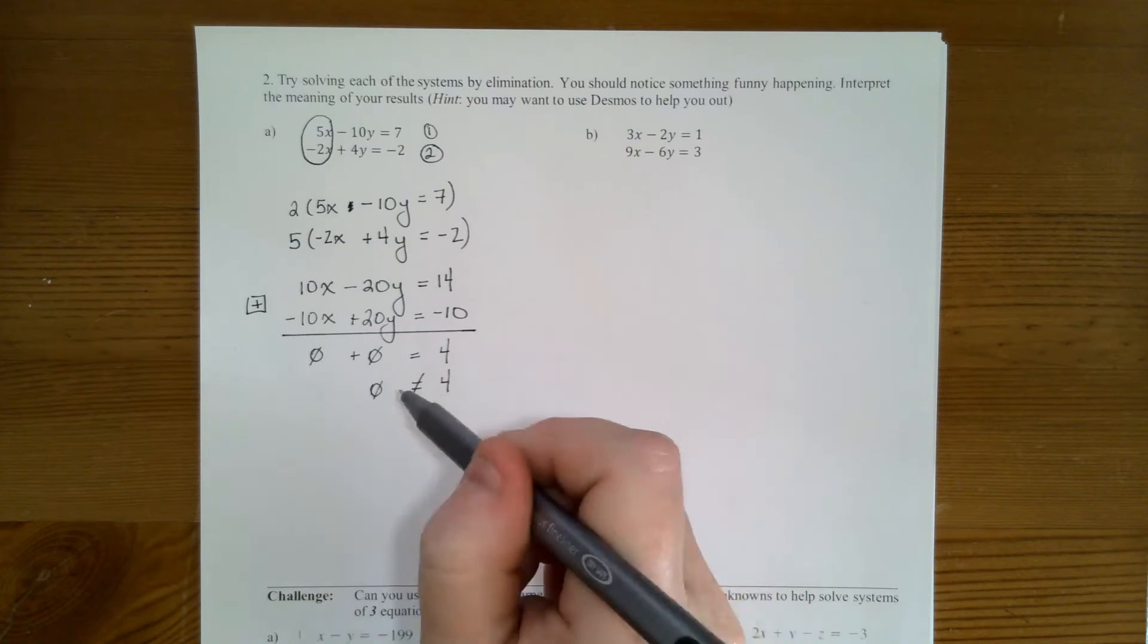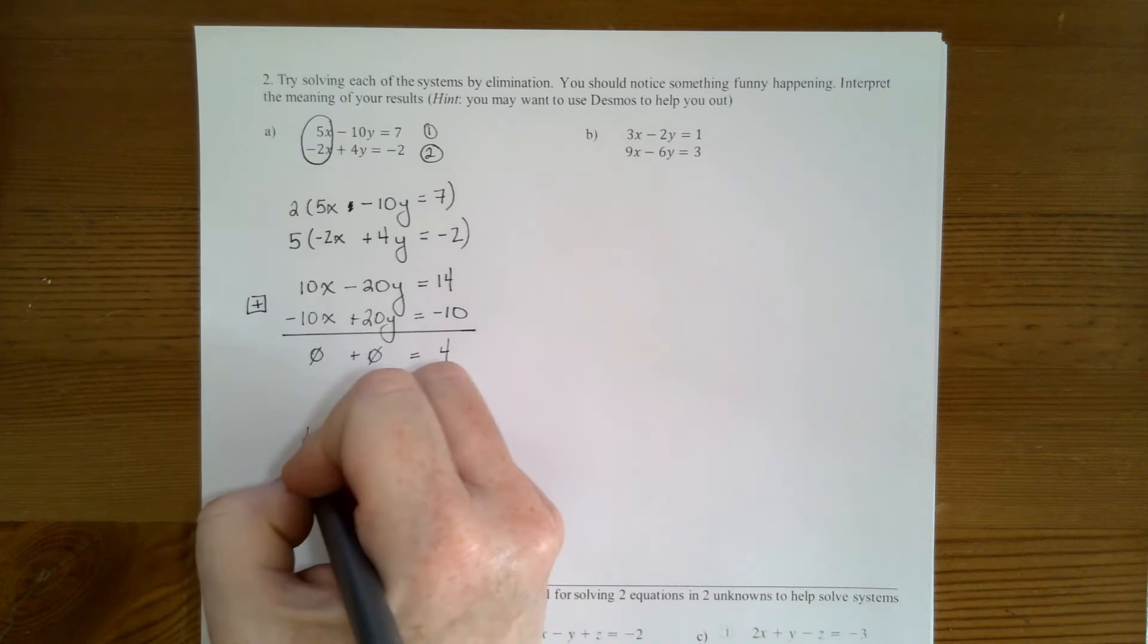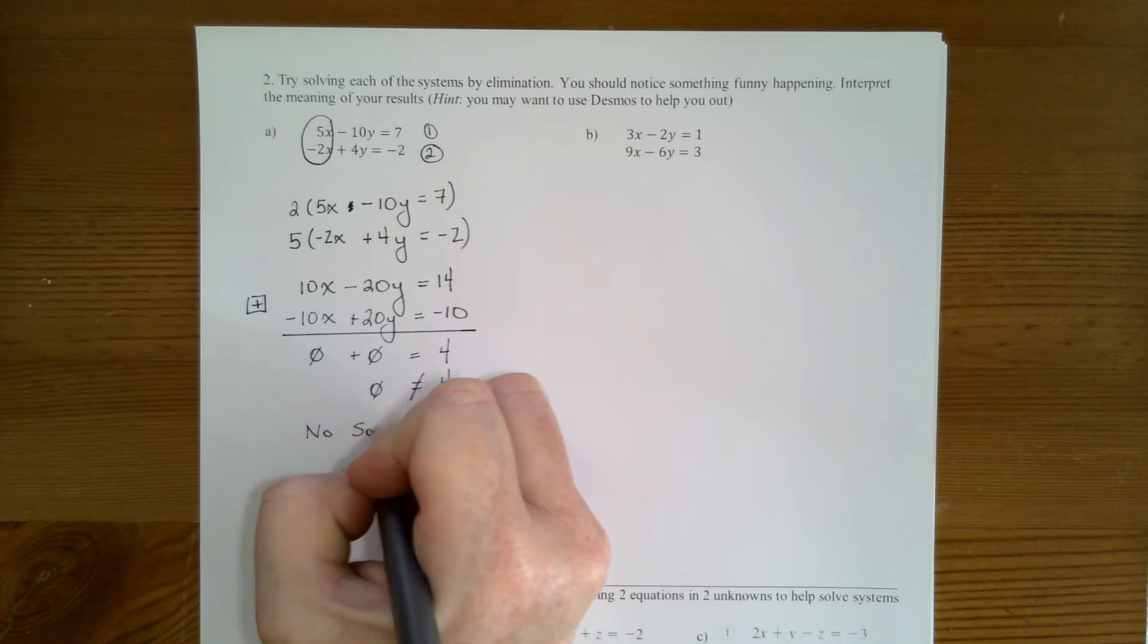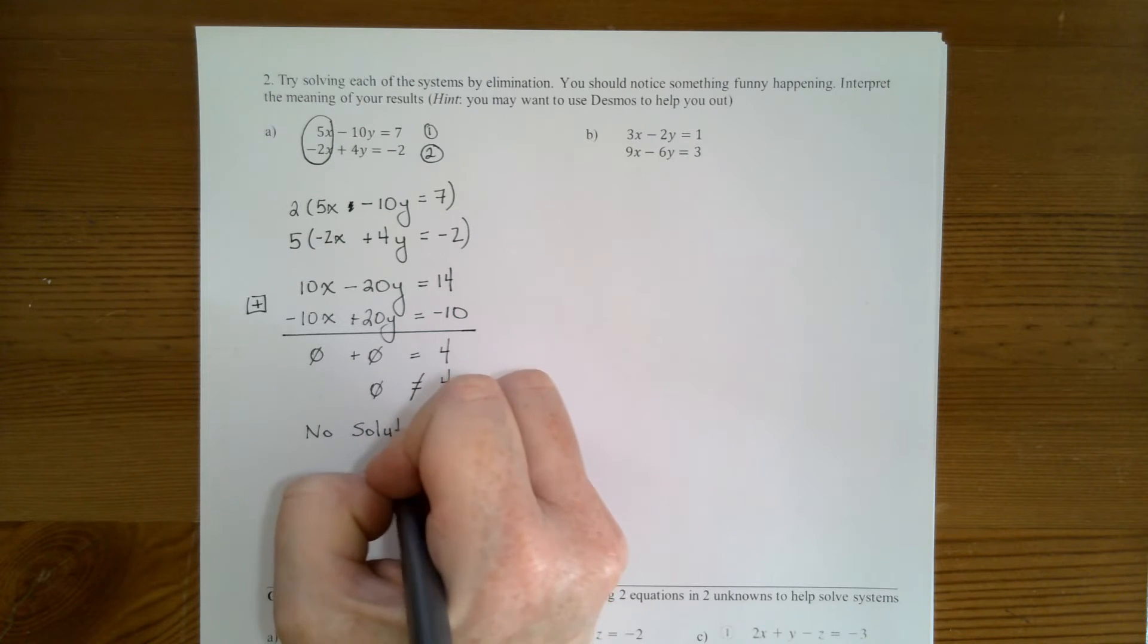Which means then that we can't get a solution here. So in essence, there's no solution and there's no point of intersection.